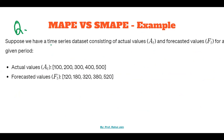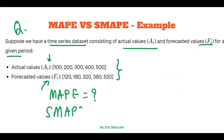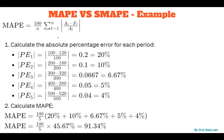Suppose we have a time series dataset consisting of actual values At and forecasted values Ft for a given period. We have these values shown here. We need to calculate the Mean Absolute Percentage Error and the Symmetric Mean Absolute Percentage Error. The formula has already been discussed in a detailed lecture on this metric, so we apply it directly here.